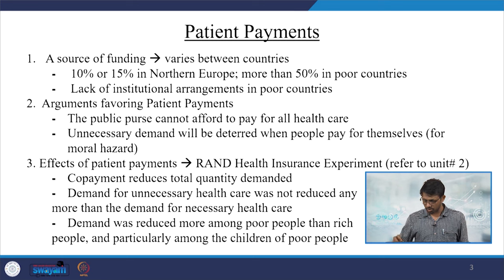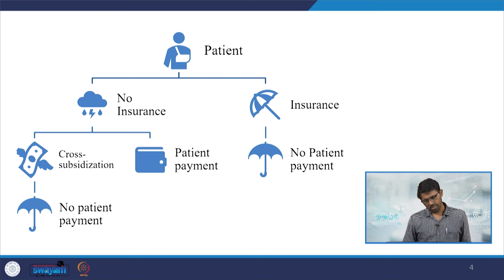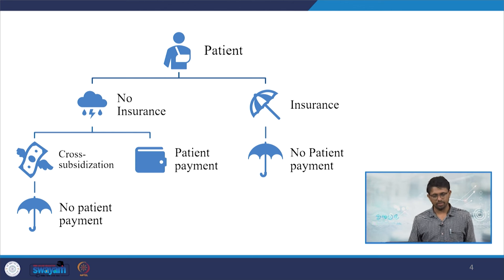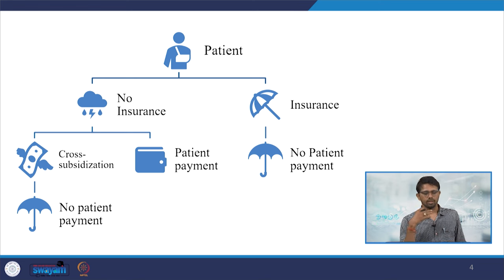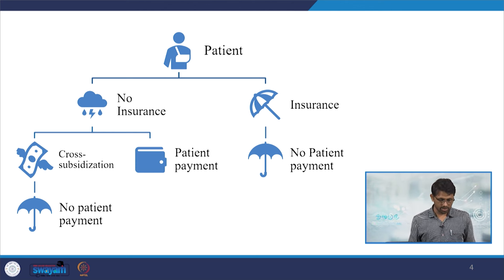Payments by patients are made either through insurance or with no insurance. There may be cross-subsidization where different income quantile groups pay differently, cross-subsidizing less income people through patient payment where insurance is not present or the patient is directly paying. In case of cross-subsidization, there might be a possibility of no patient payment.